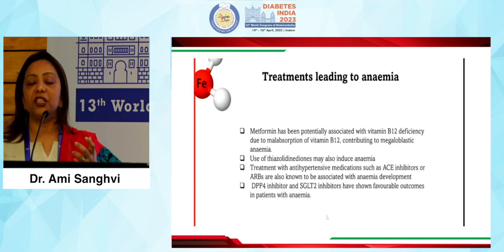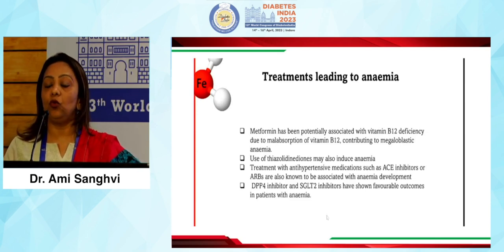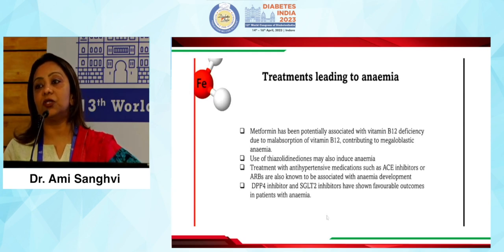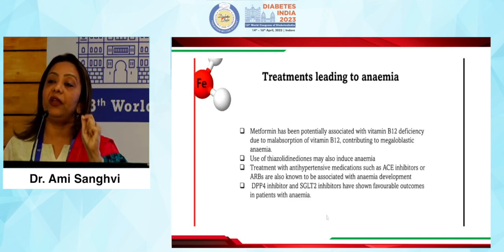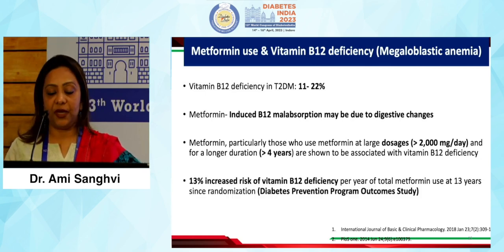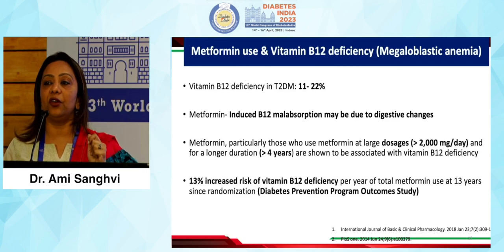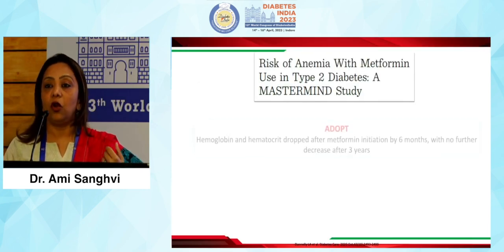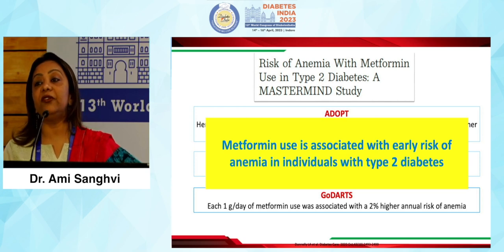Certain OHAs and treatment regimens in our patients can also lead to anemia. Most importantly, metformin causes malabsorption of B12, leading to megaloblastic anemia. Thiazolidinediones can lead to bone marrow depression and anemia. Treatment with ACE inhibitors and ARBs is also associated with anemia development. DPP-4 inhibitors and SGLT-2 inhibitors have shown some favorable outcomes, though more data and studies are required. Metformin, especially in higher doses over a long period of time, can lead to B12 deficiency — particularly in patients who are vegans or vegetarians. Studies like CODART, the ADOPT study, and the UK study have also shown that metformin raises early risk of anemia in type 2 diabetes patients.